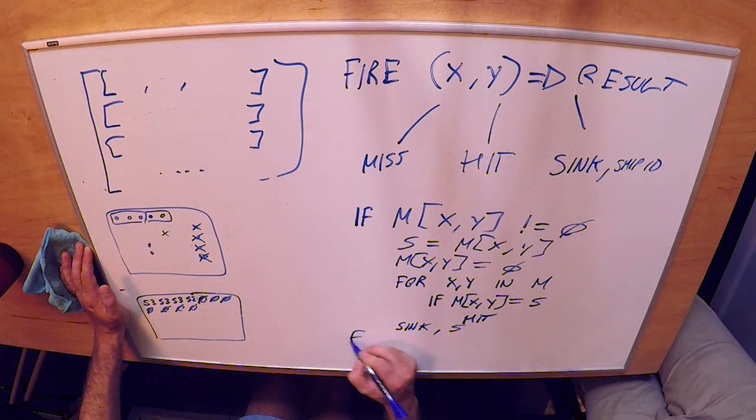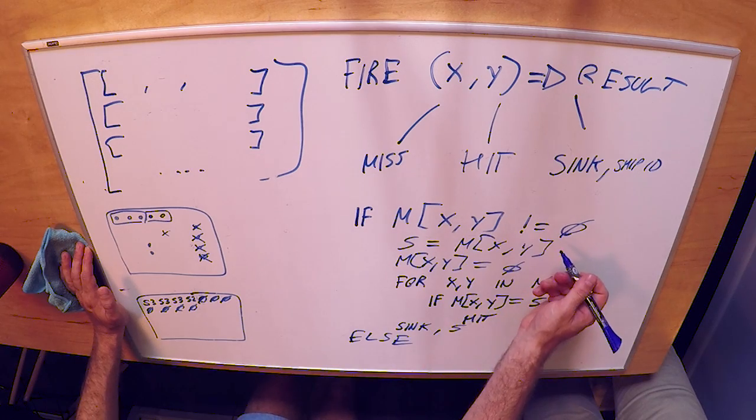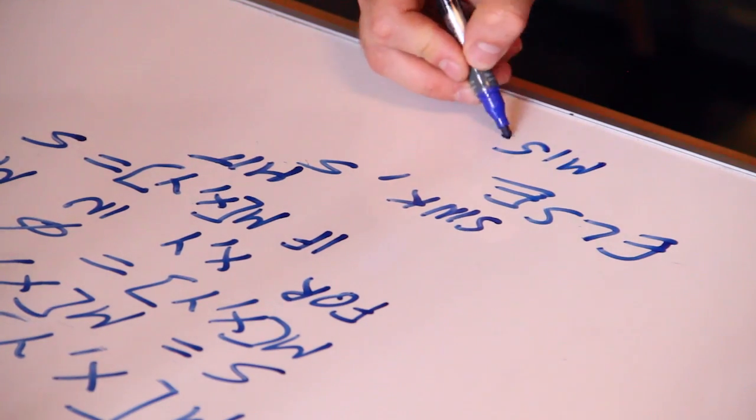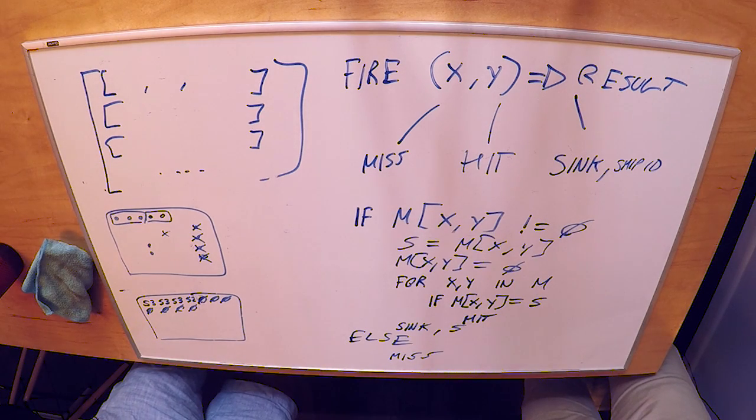And then the else branch if there wasn't a ship there at all, it's a miss. And so there we have a new perfectly valid solution to battleship. So that's how you ace battleship.